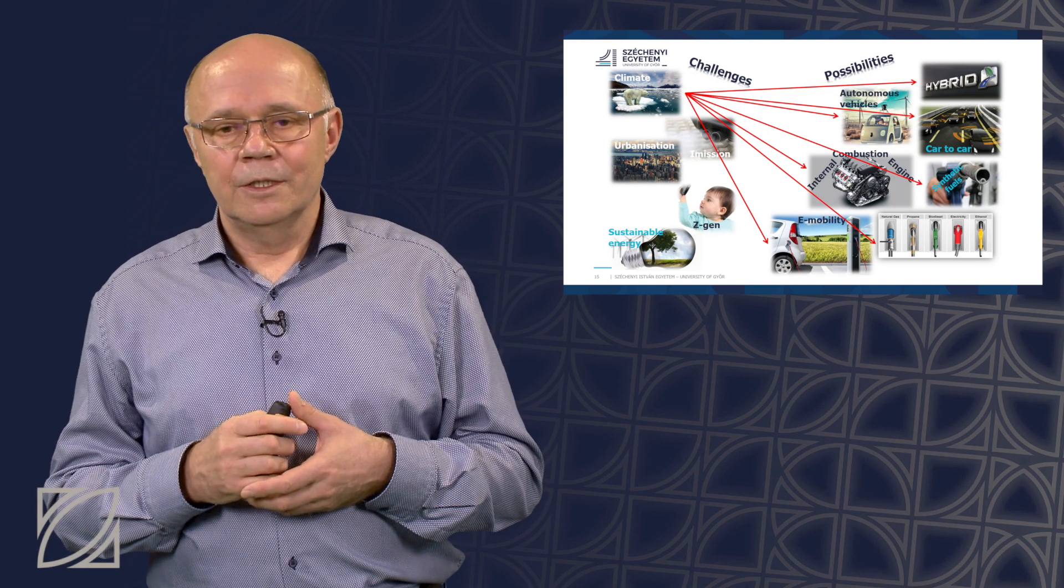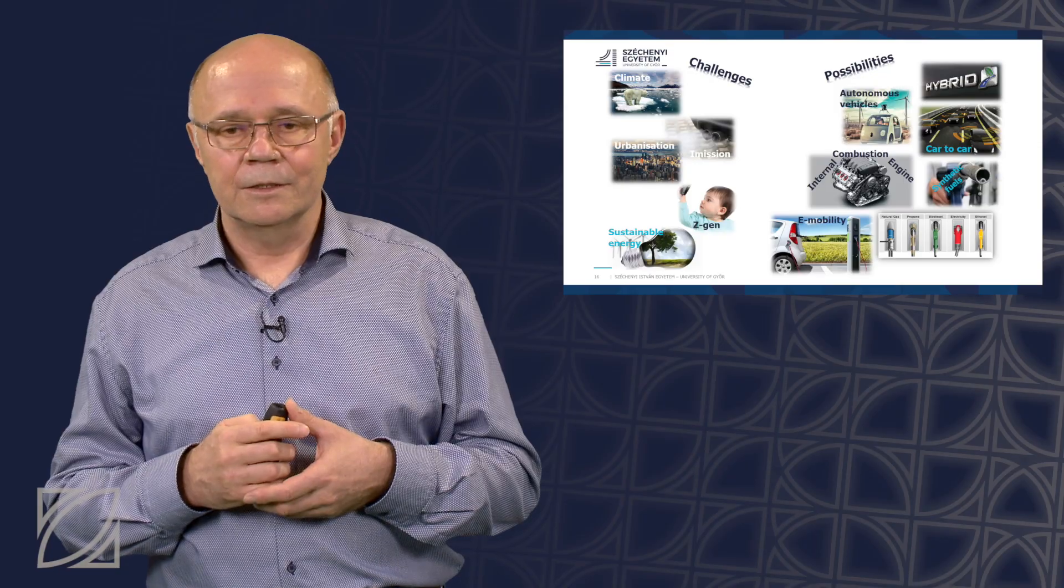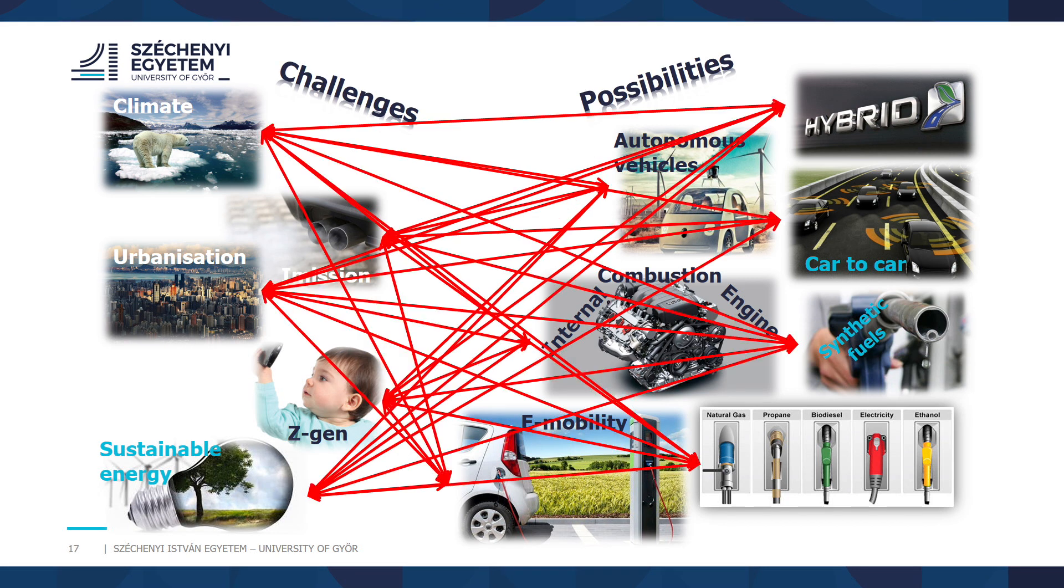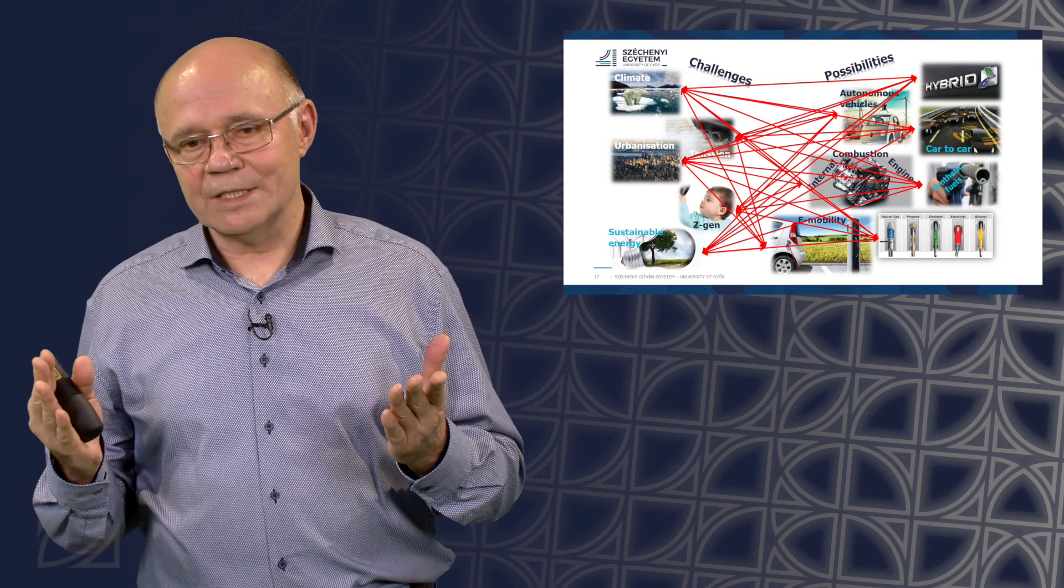The other way around, just have a look at one technology, autonomous vehicles. Autonomous vehicles will have an impact, a positive impact on climate change, will have a positive impact on air pollution, will help in the urbanization process because many people, maybe elder people, they can stay mobile with those vehicles without a driving license. And it will support maybe the new habits of Generation Z and Alpha. It will address sustainable energy as well. So, as a matter of fact, as an engineer, you will see you have to deal with very complex systems. And this is more or less the main message. This is engineering.